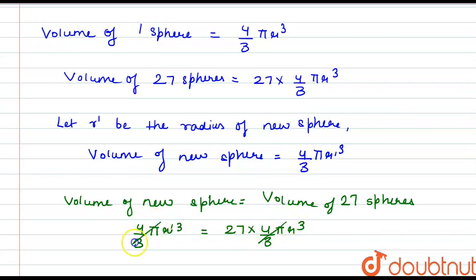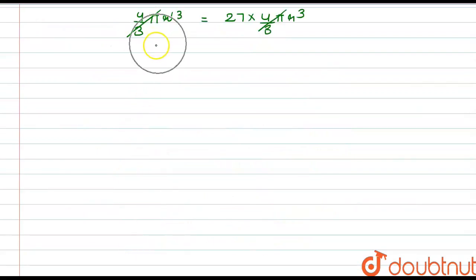The remaining value is r'³ = 27r³, or we can say that r' = 3r. This is the value for the new radius, or the radius of the new sphere.